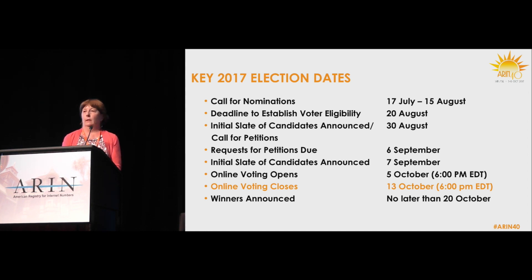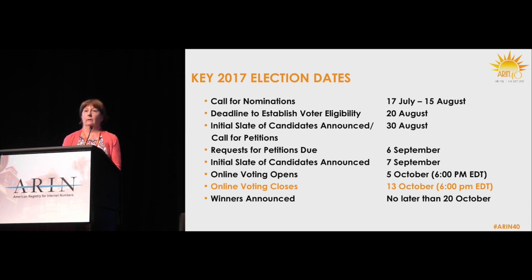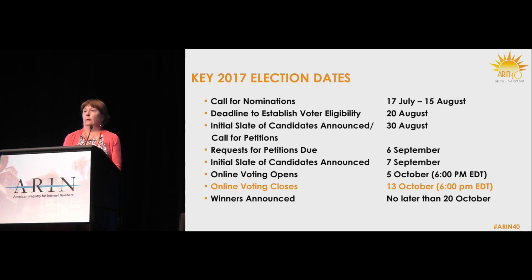The call for nominations was the 17th of July through the 15th of August. We set the voter eligibility deadline as August 20th and announced the initial slate of candidates at the end of August. At that time, we also have a call for petitions — anyone is able to run a petition, and if they get enough support, their name appears on the ballot. We had no requests for petitions this year, so the final slate of candidates was announced shortly thereafter, and now we're moving into the voting period. Winners will be announced shortly after voting closes, but no later than the 20th of October.